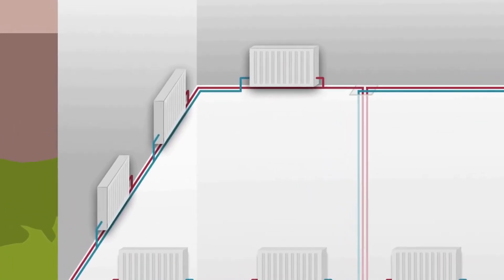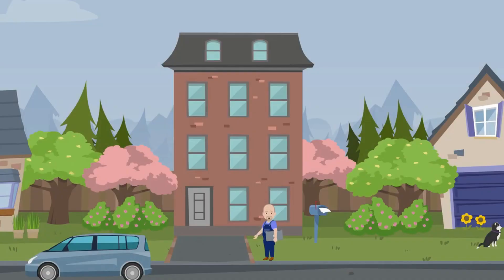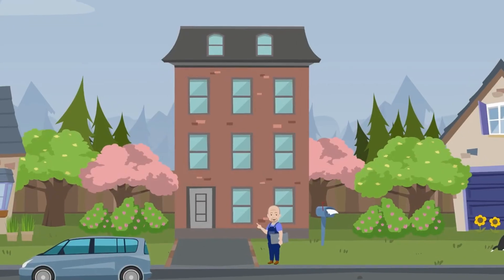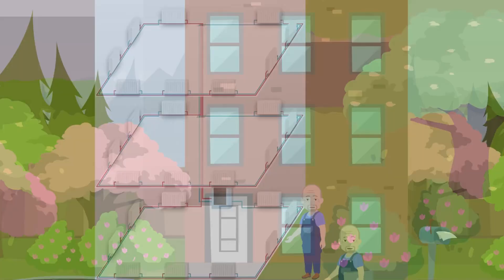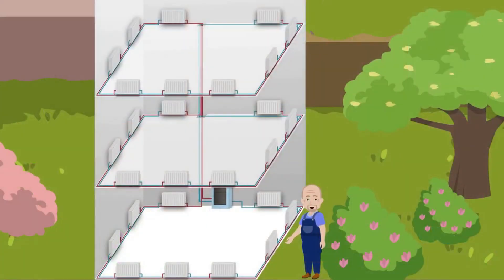Two pipe for three floors. Now, we're going to make the task even more difficult. Each of our floors will be connected according to the same Tischelmann system. Each floor has a separate heating system. And within this floor, within this heating system, all the radiators are connected according to the Tischelmann system layout.